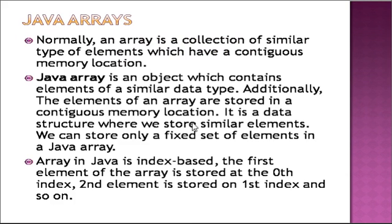Now let's start the definition of Array. An array is a collection of similar types of elements which have a continuous memory location. Continuous memory location means every data element is stored in a continuous memory pattern in Java. Additionally, each data element is stored at a particular address, and that address is called indexing.